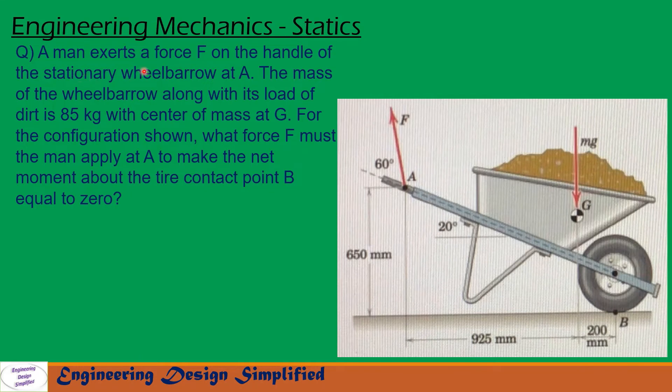Today's problem is a man exerts a force F on the handle of the stationary wheelbarrow at A. The mass of the wheelbarrow along with its load of dirt is 85 kg with center of mass at G. For the configuration shown, what force F must the man apply at A to make the net moment about the tire contact point B equal to zero?